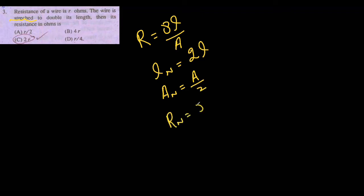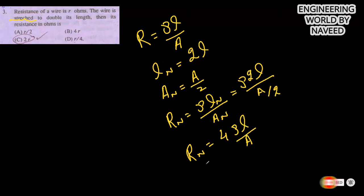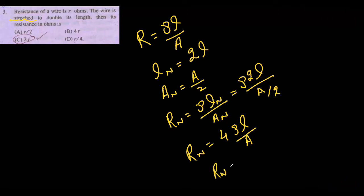We need to find R_new, which equals ρ·L_new / A_new = ρ·(2L) / (A/2) = 4ρL/A = 4R. Since the resistance of the wire is R ohm, R_new equals 4R. So option B is the correct answer.